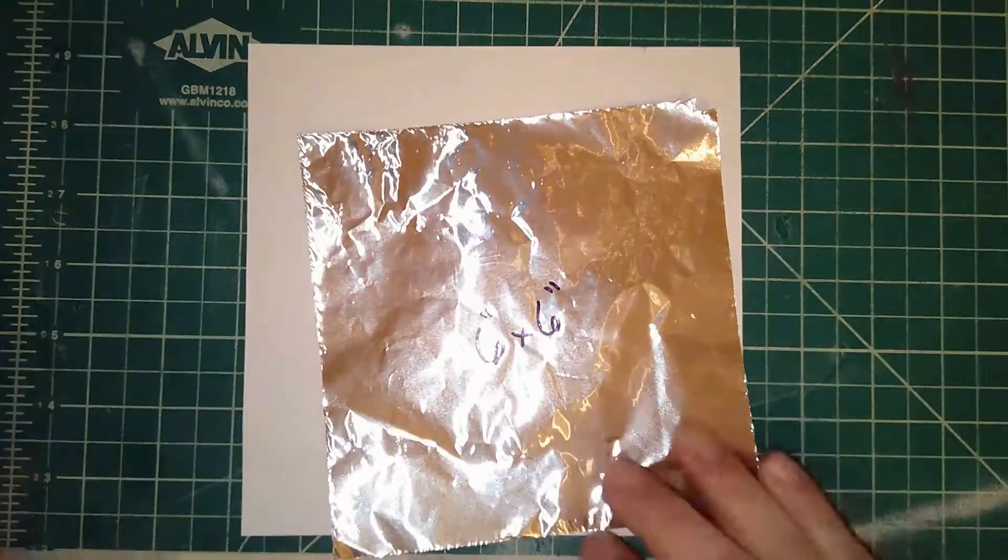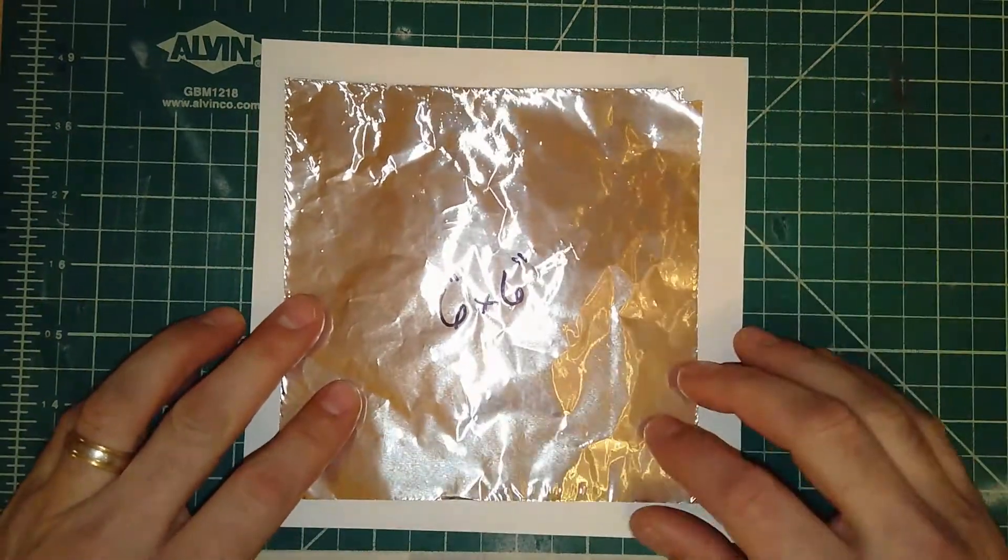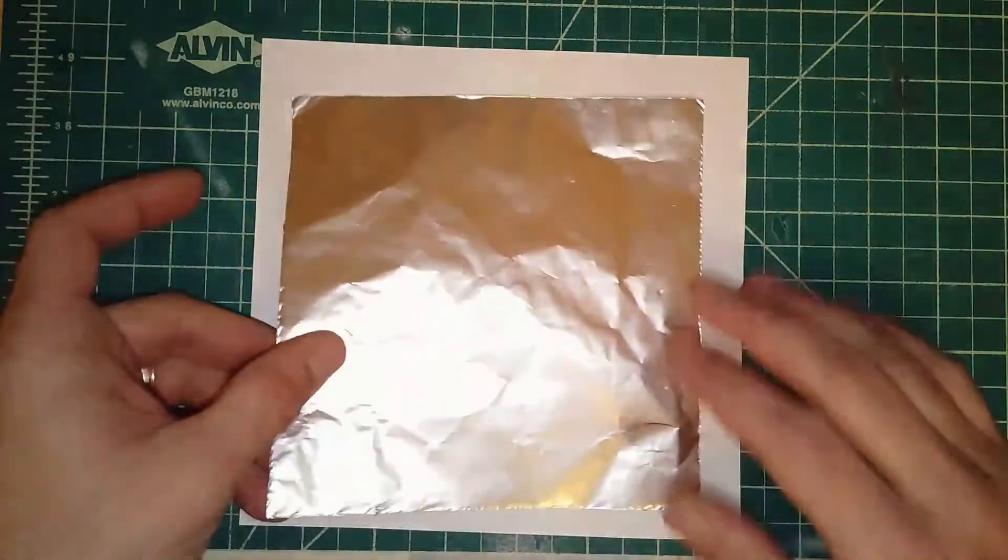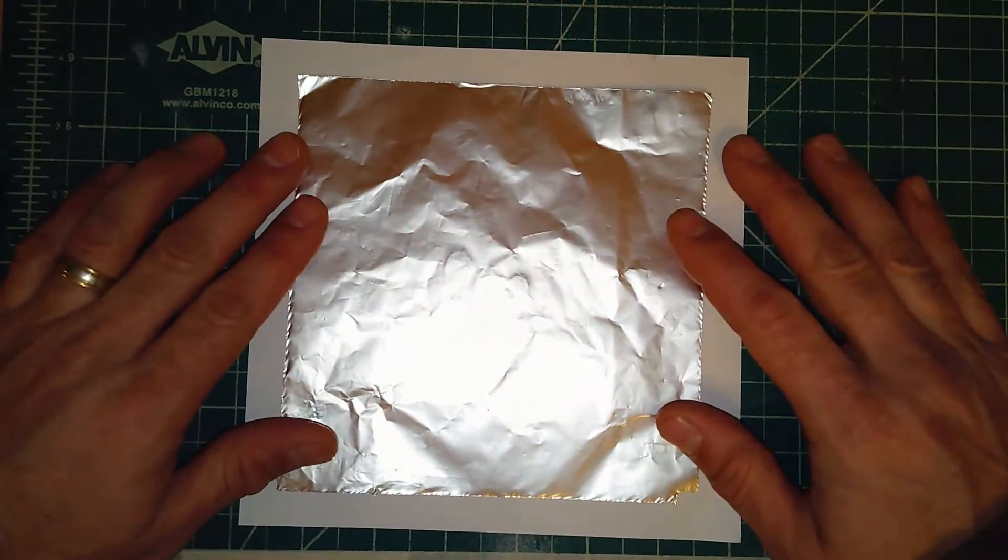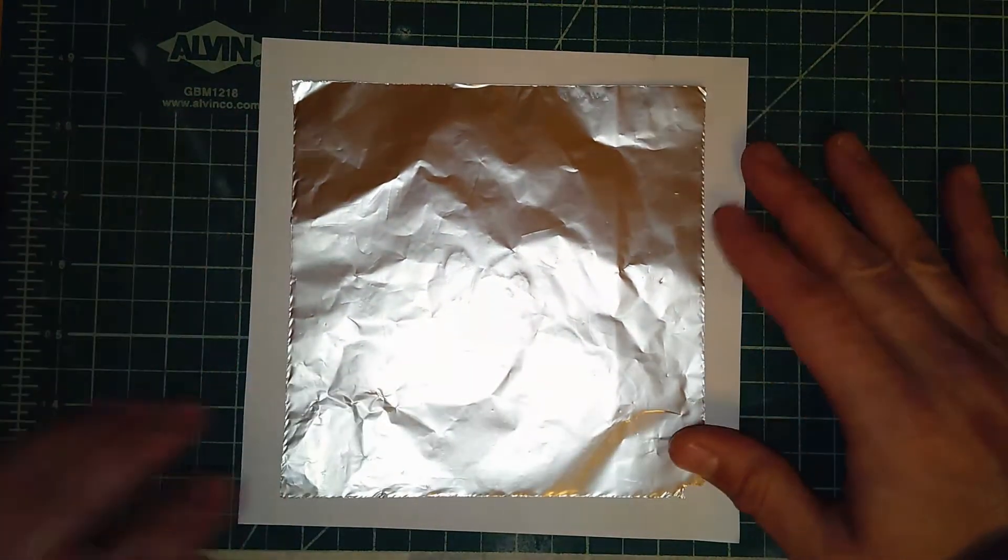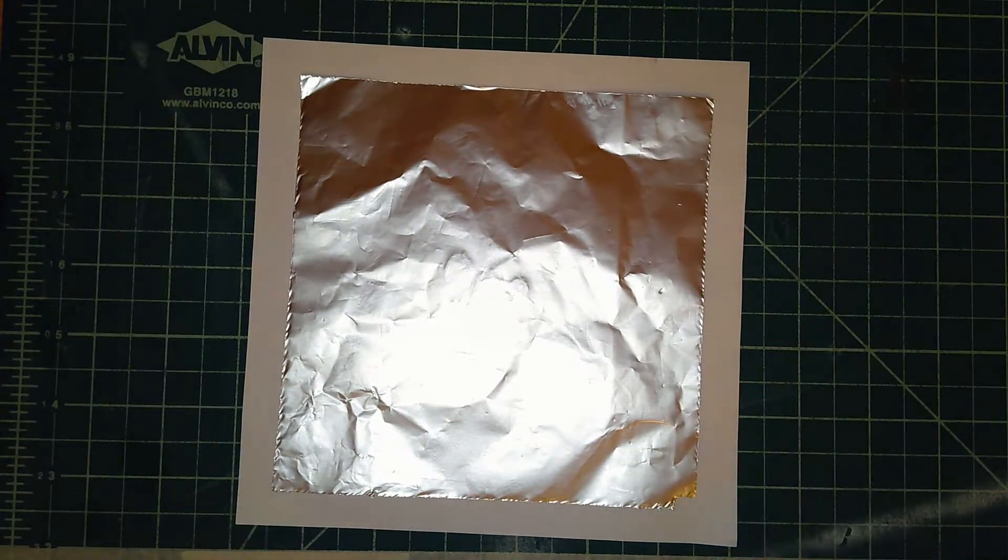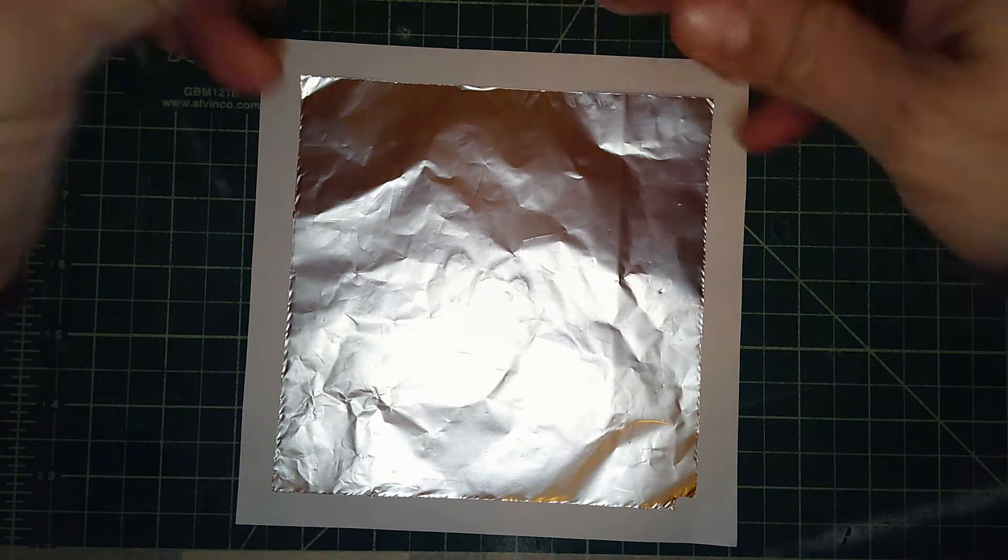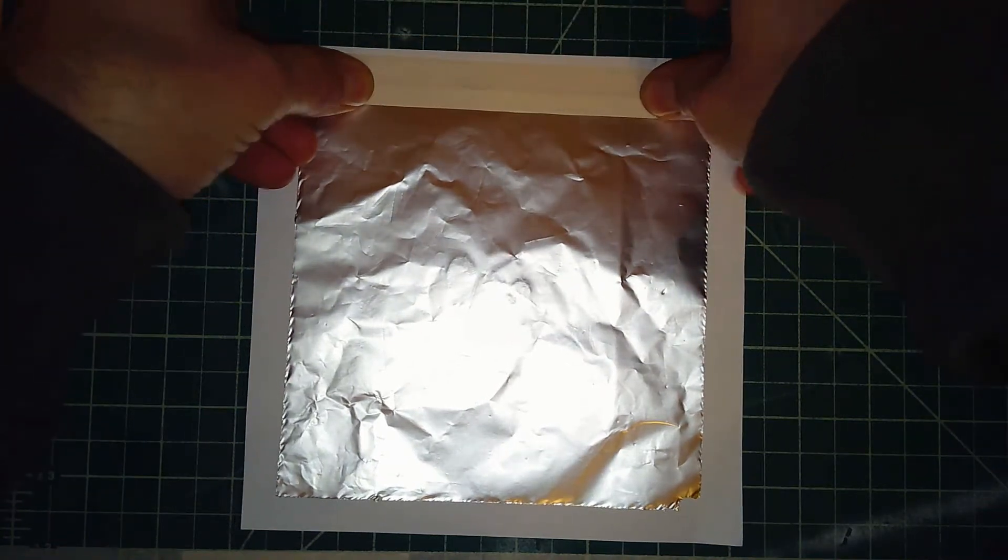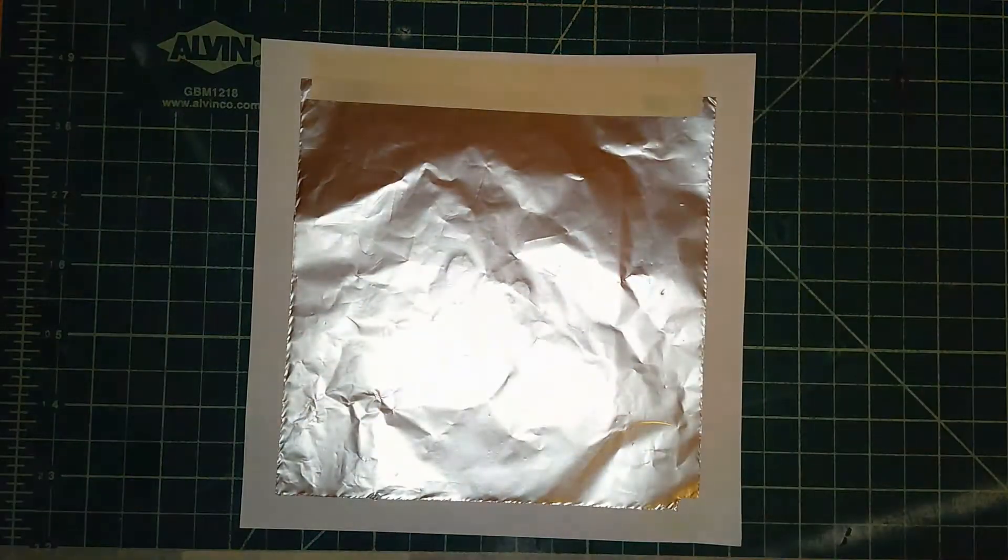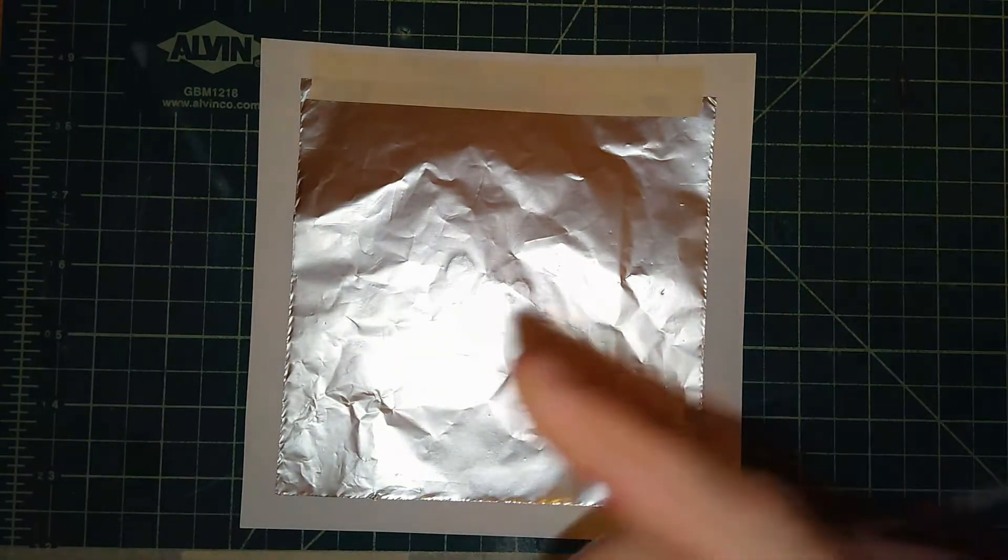We'll go ahead and tape this onto our piece of printer paper and I'm just going to center this thing up. Doesn't have to be absolutely perfect but it looks pretty decent. And we'll go ahead and tape that down and we'll do that all the way around the square.